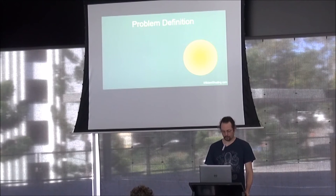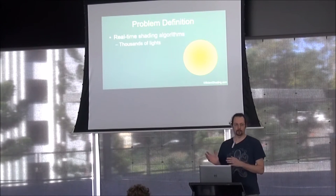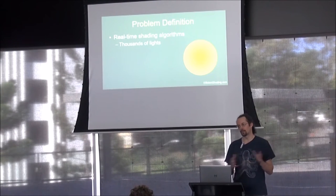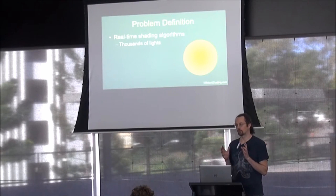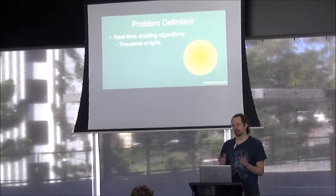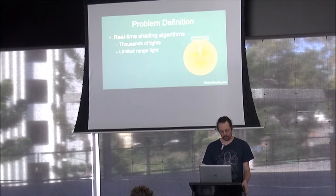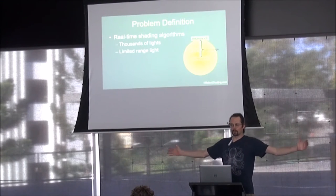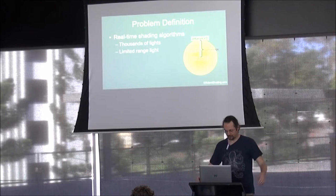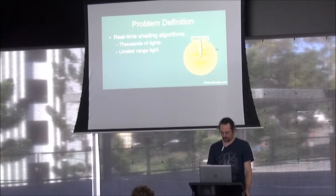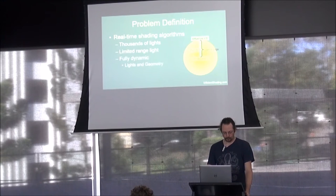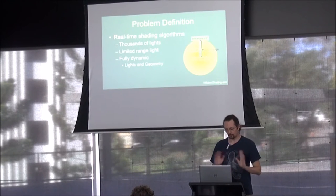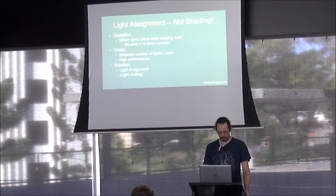Problem definition: we're talking about real-time algorithms — not offline rendering — on the order of thousands of lights, not millions or hundreds of thousands where you'd want approximation techniques. We talk about non-physical limited range lights, the kind where photons fall off at x meters, which is normal in games for performance reasons. We're also assuming everything is dynamic — lights and every part of the scene can move freely every frame, with no pre-computation.